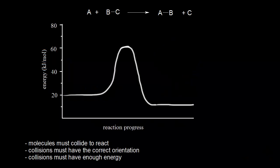To think about collision theory, let's consider the following reaction. Here we have atom A reacting with a diatomic molecule BC to form a new diatomic molecule AB and C. According to collision theory, molecules must collide to react. So for this example, atom A has to collide with molecule BC in order for the reaction to occur.